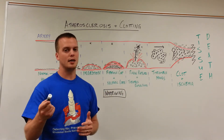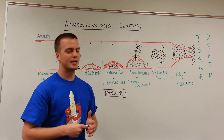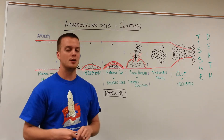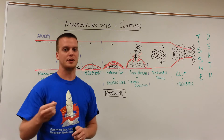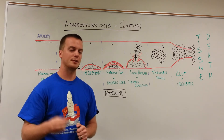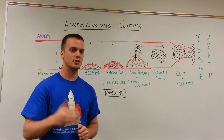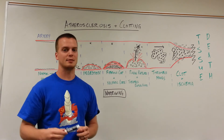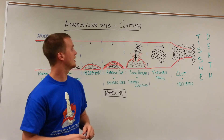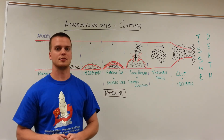Another common clinical manifestation is pulmonary embolism. Your lungs, just like your heart, have a lot of very small blood vessels and capillaries for gas exchange to occur. Those can very easily be blocked by these thrombi as well. And that is an introduction to atherosclerosis.